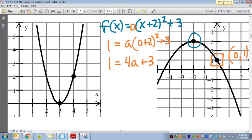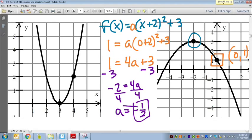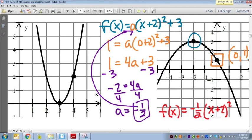So 4a plus 3 equals 1, subtract 3, and I get negative 2 equals 4a divided by 4, and a equals 2 over 4 reduces down to negative 1 half. So negative 1 half is my multiplier that goes in front of my equation, so my final answer would be f of x equals negative 1 half times x plus 2 squared plus 3.